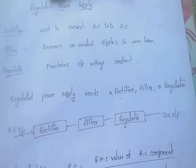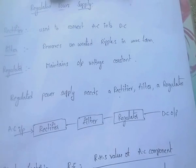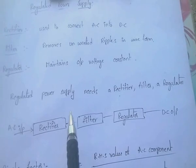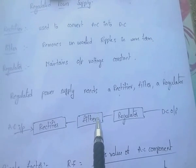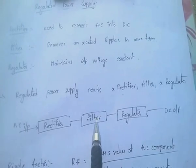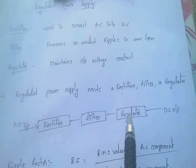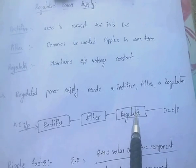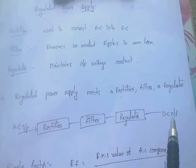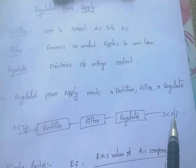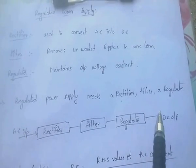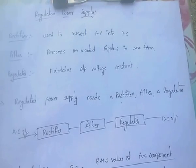The power supply circuit has a rectifier, filter, and regulator. The rectifier converts AC into DC, and that DC is fed to the filter which removes unwanted ripples. The output is then fed to the regulator which maintains constant output voltage. So if we give AC input to the RPS, we get constant DC output.